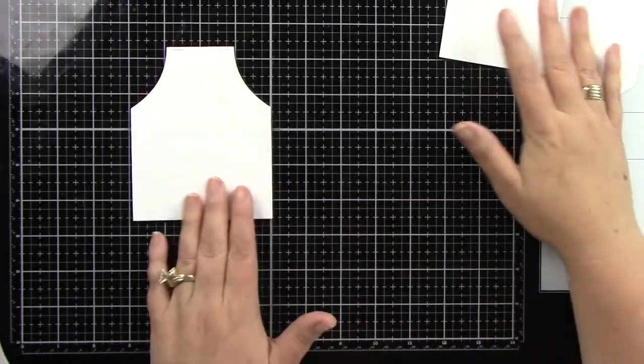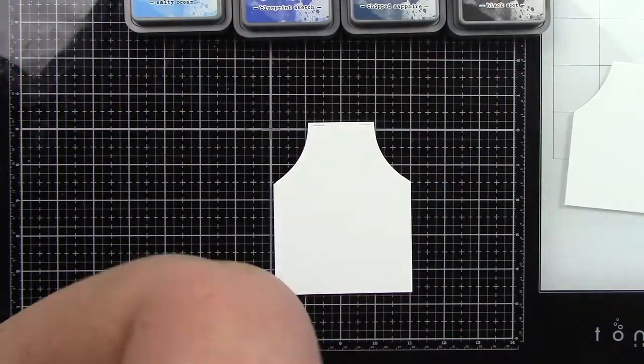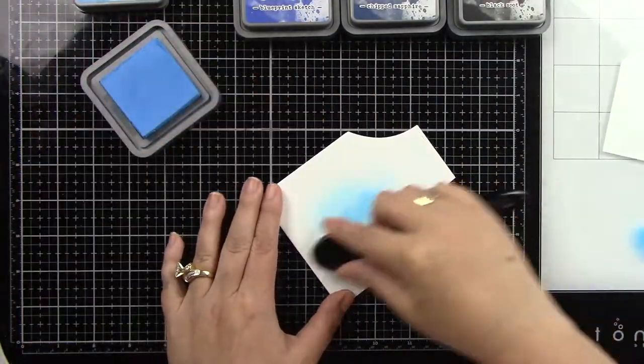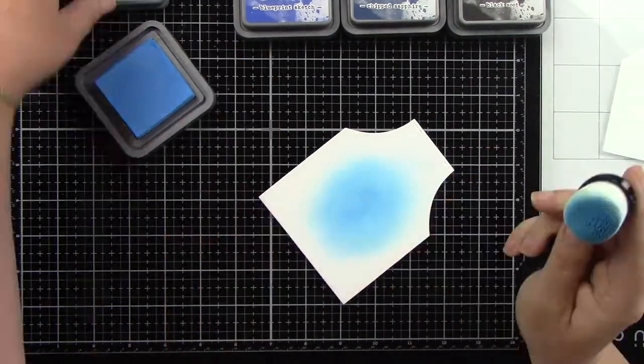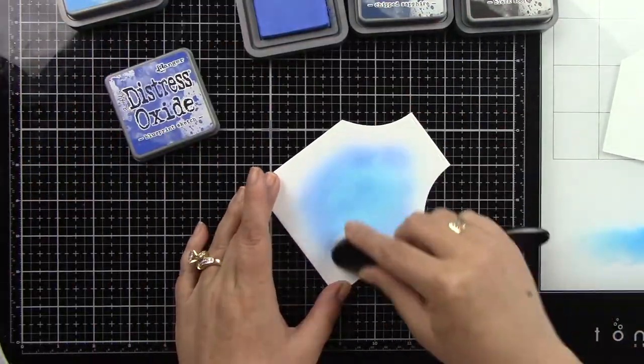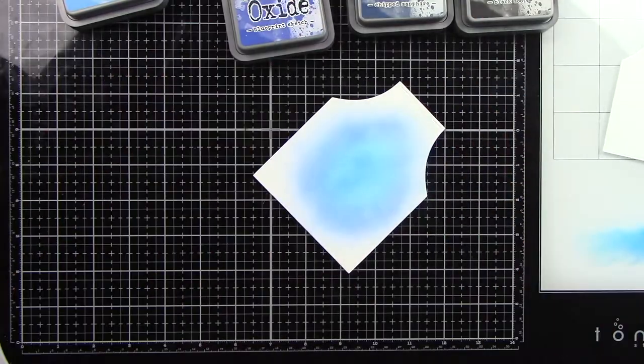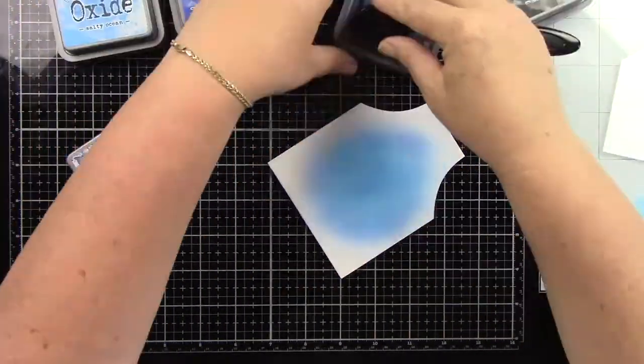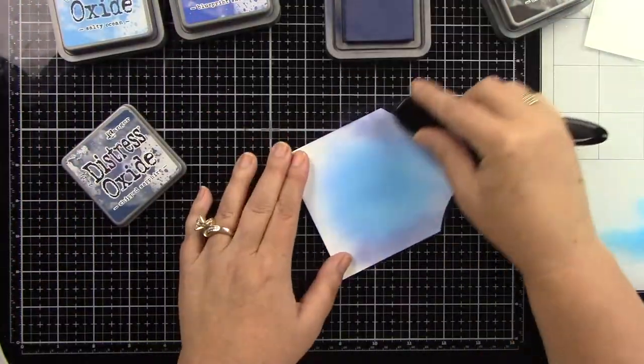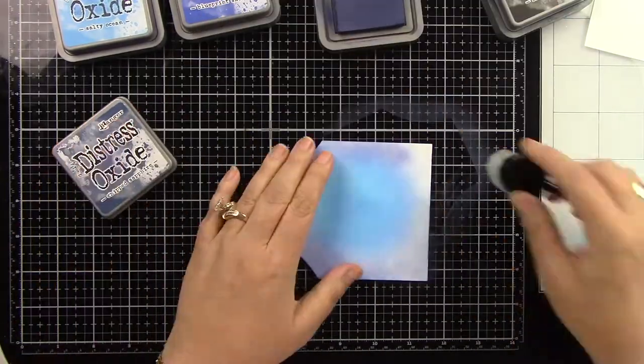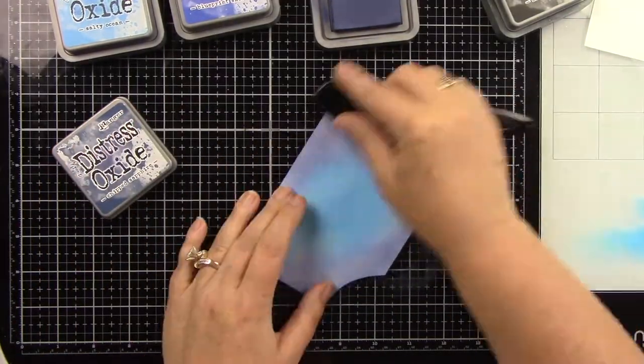I'm not going to use that smaller piece. I'm going to focus on this larger piece and do some ink blending using Distress Oxide inks. I'll be using Salty Ocean, Blueprint Sketch, Chipped Sapphire, and a little bit of Black Soot.